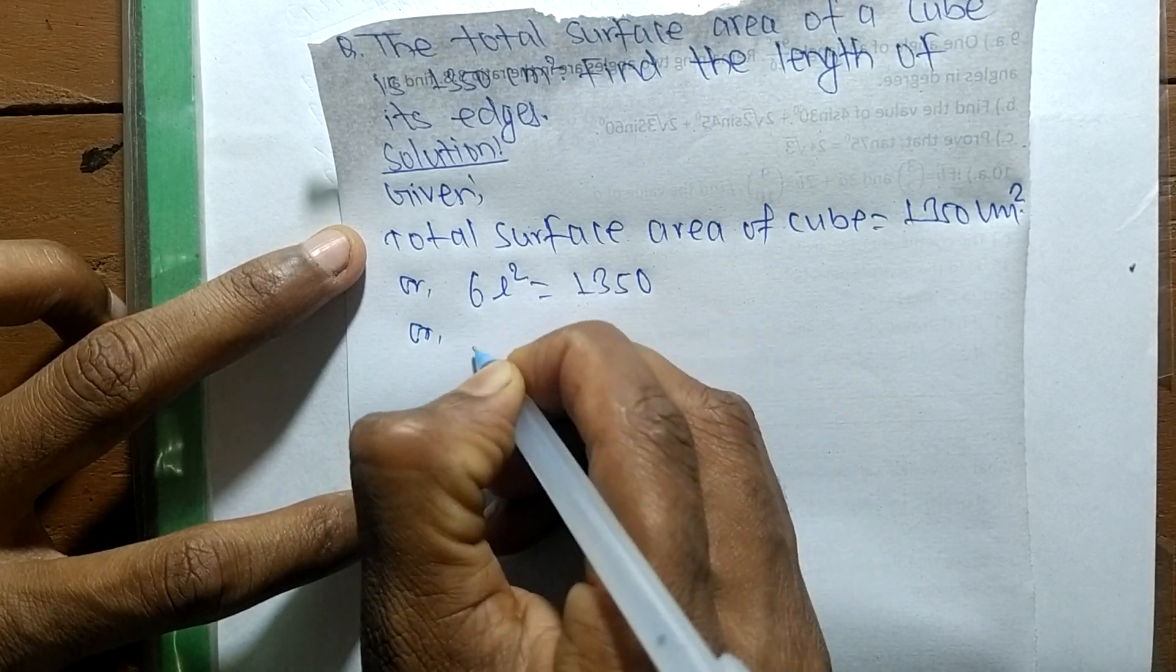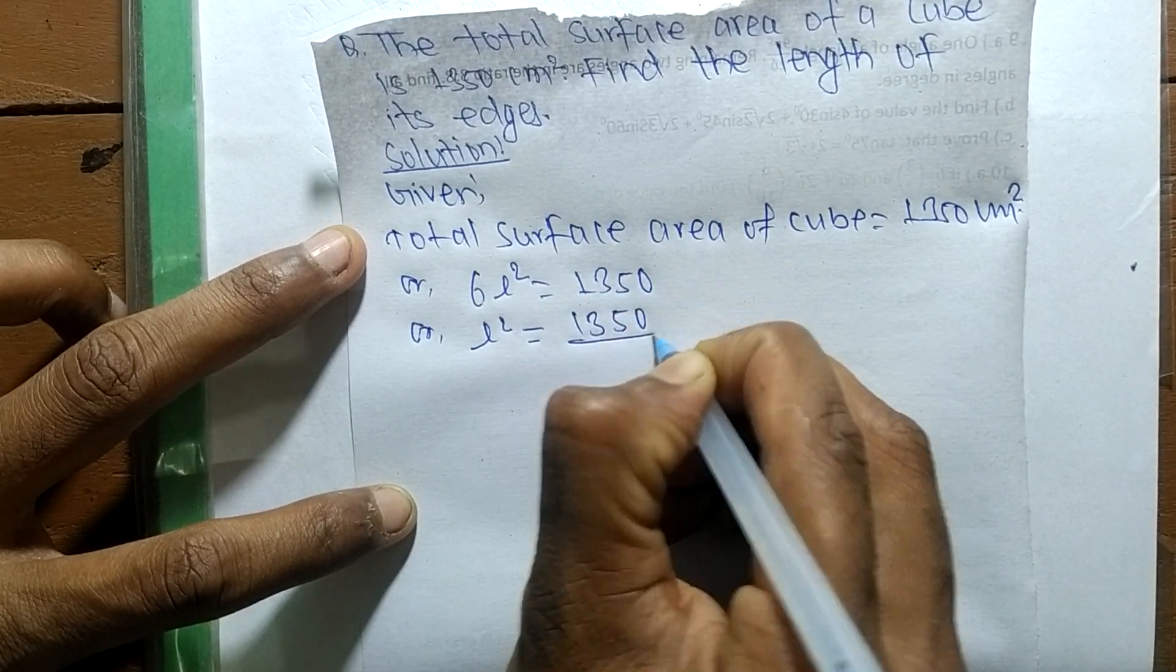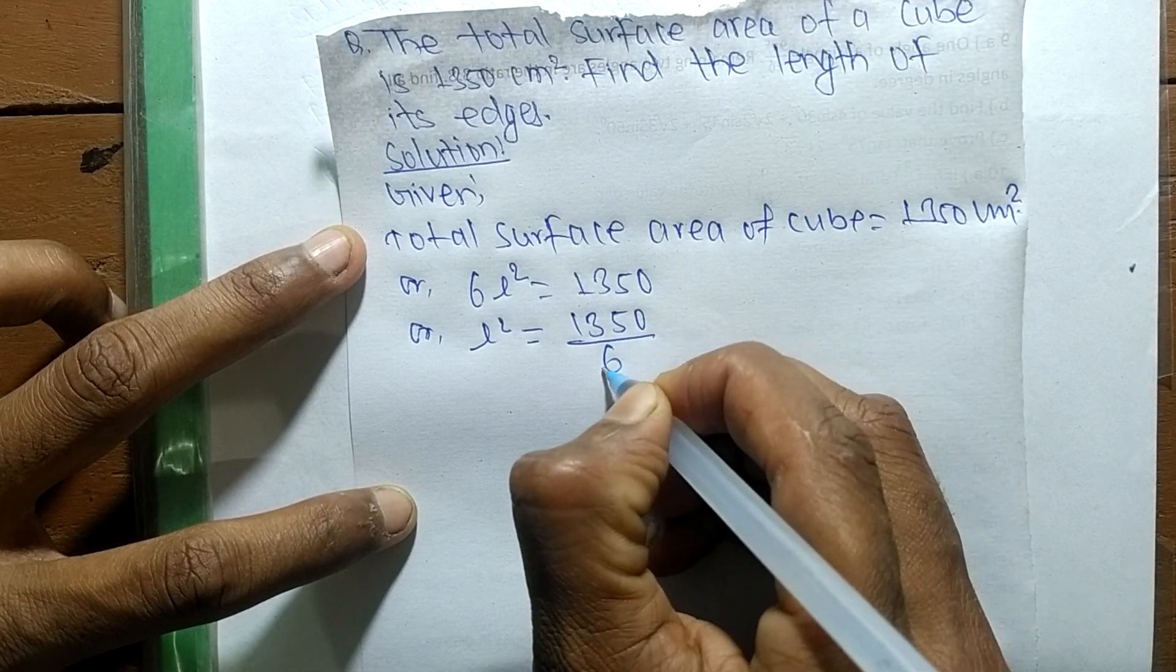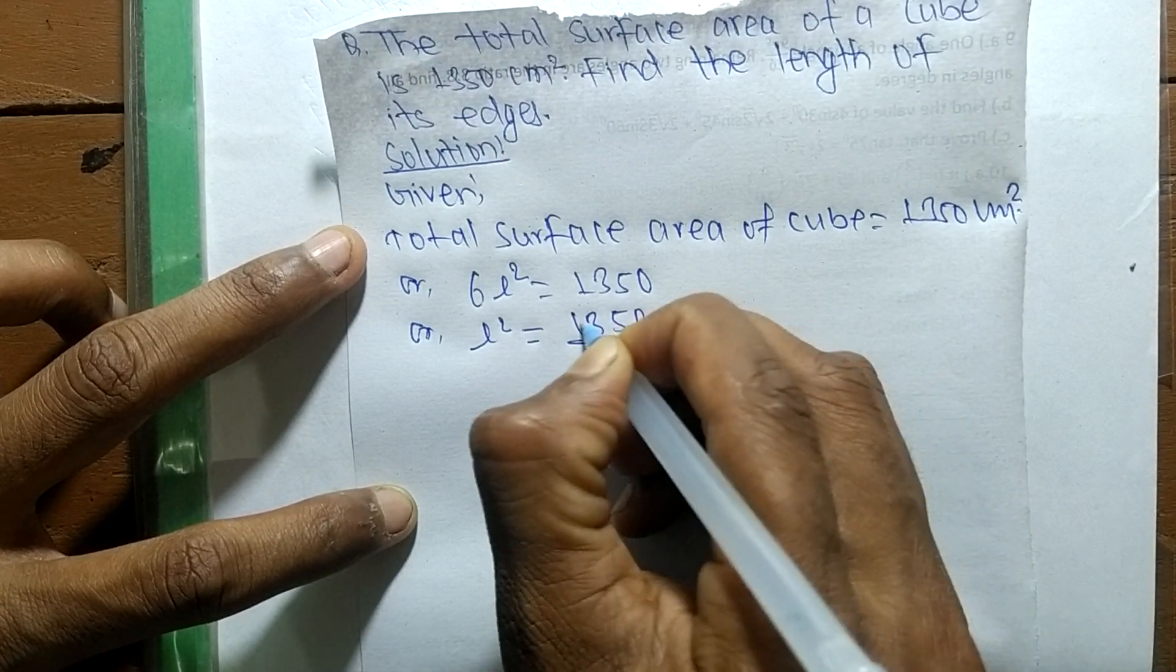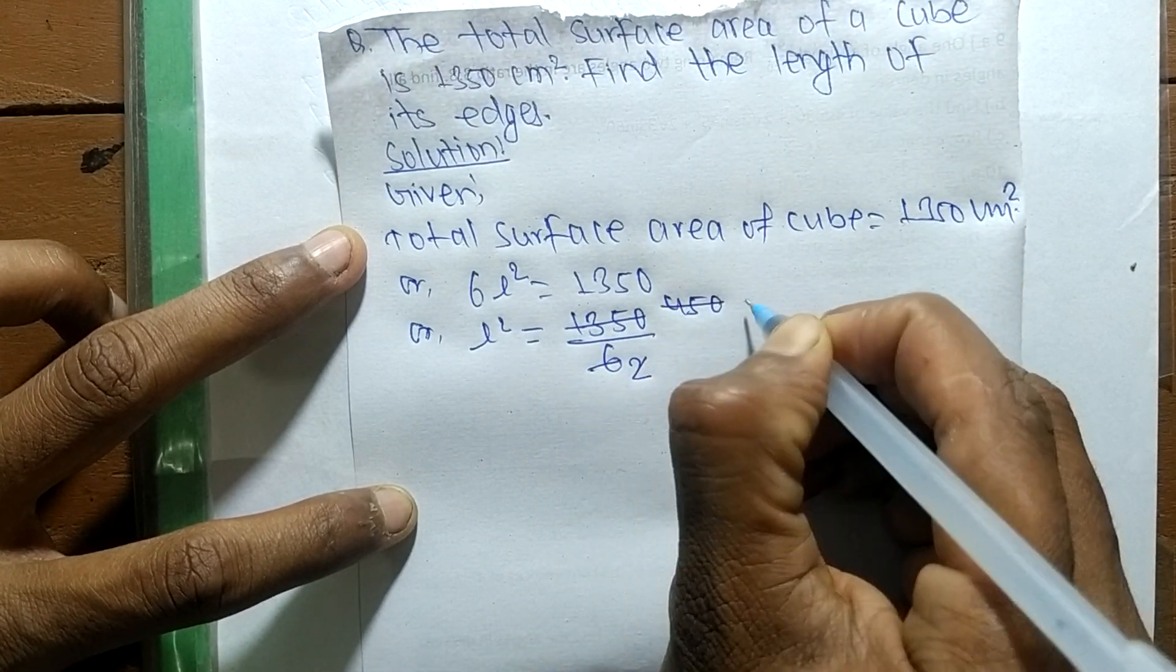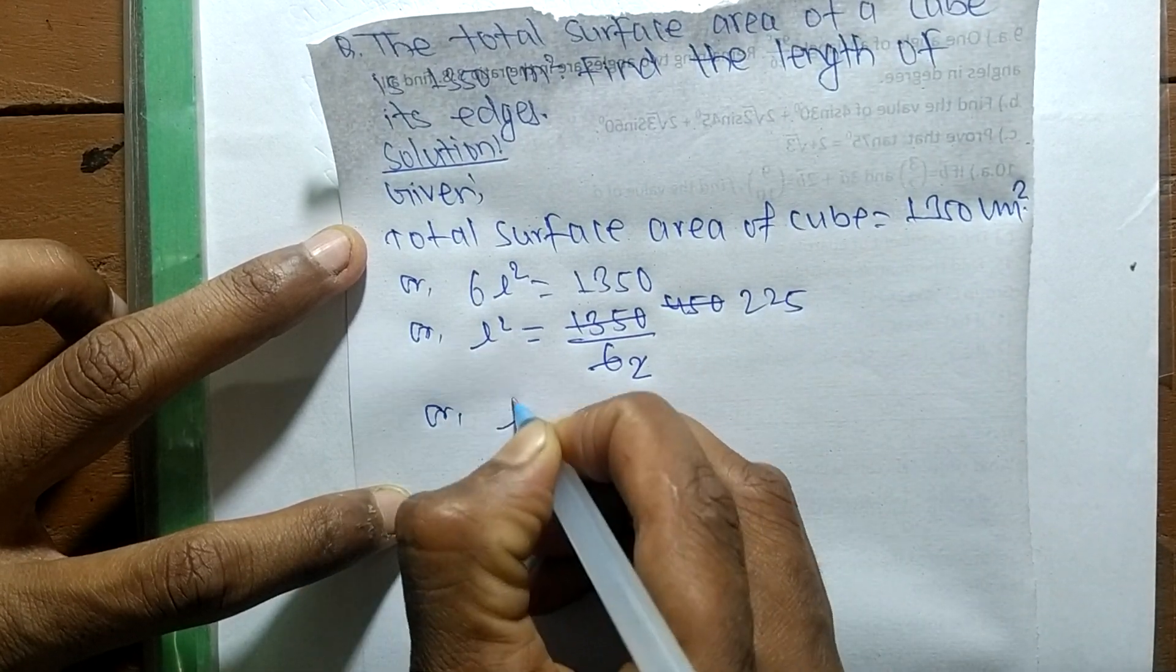So it is 1350 by 6. Now we have to cancel: 3 times 2 means 6, 3 times 450. It is 2 times 225.